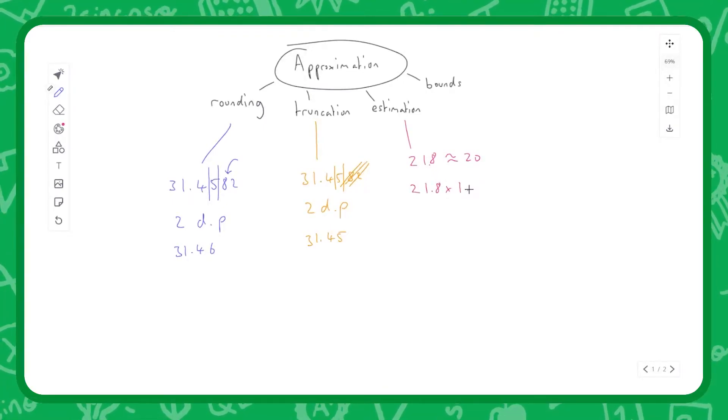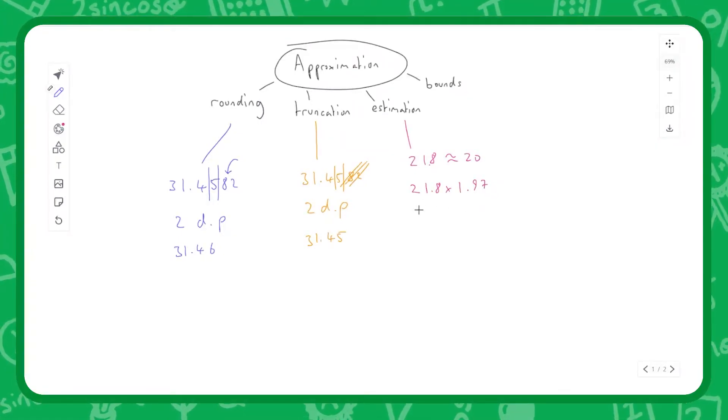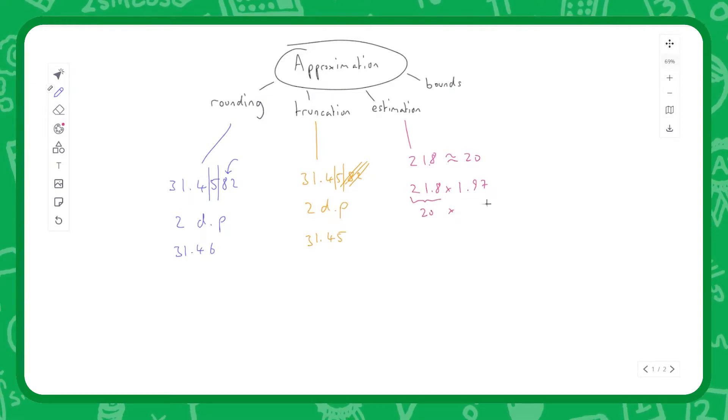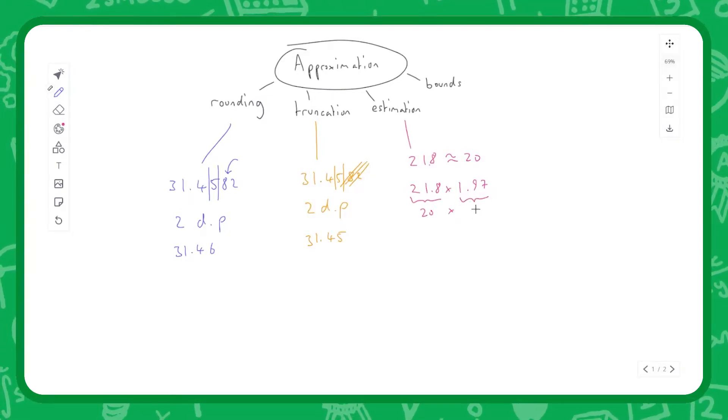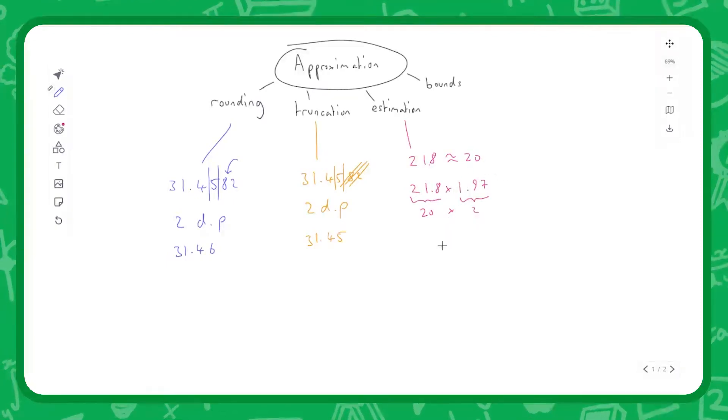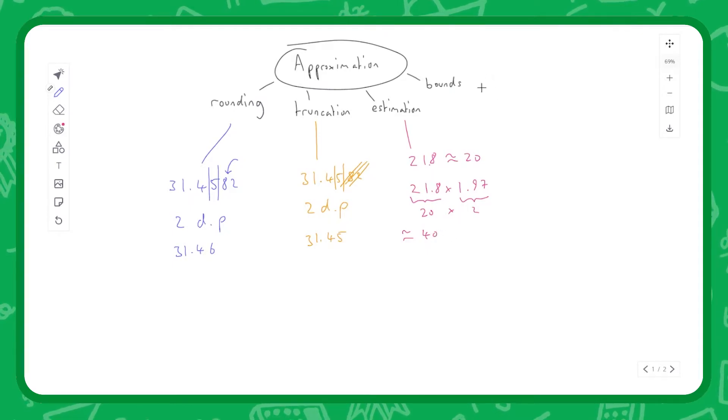Well, we'd say this is basically equal to 20 times 2, because we don't want to be messing around with 1.97. So we can say this is roughly equal to 40, and if we were to test this on a calculator we'd end up very close to that true calculation.